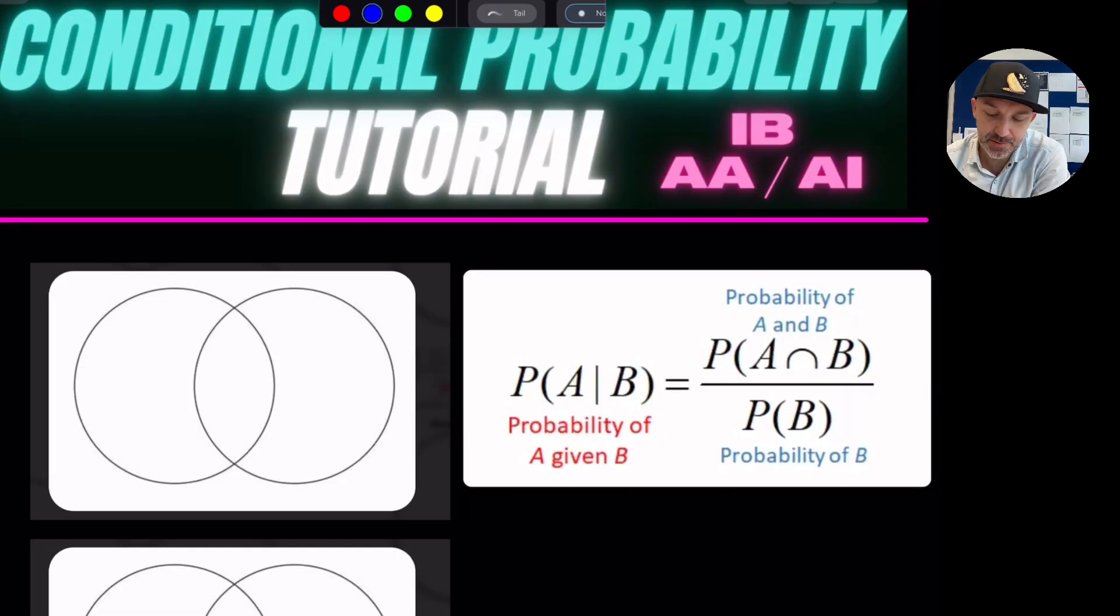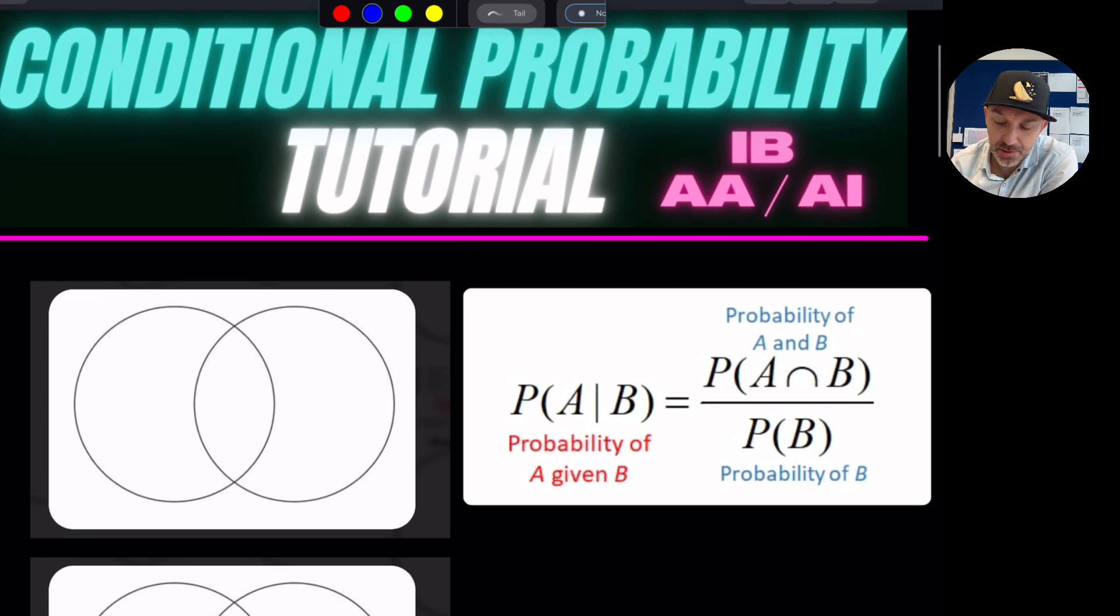Welcome back everybody. So in this episode what we're going to look at is conditional probability. We're going to be using Venn diagrams and two formulae.